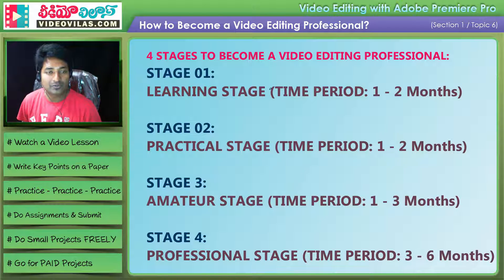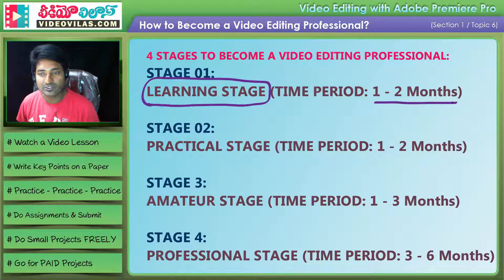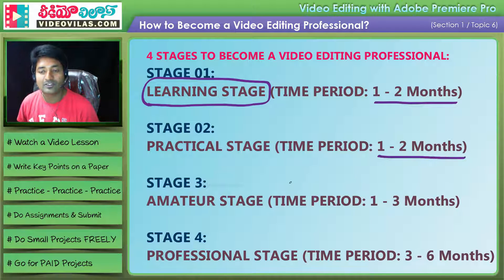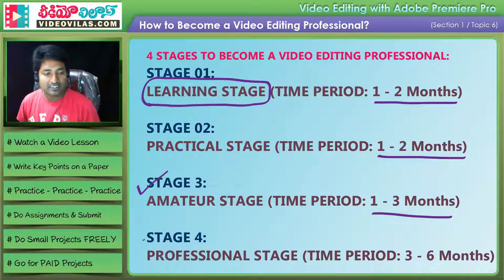We divide the journey into 4 stages. Stage one is the general learning stage, which takes around 1 to 2 months. Stage two is the practical stage, which takes around 1 to 2 months. Stage three is the amateur stage. Stage four is the professional stage.